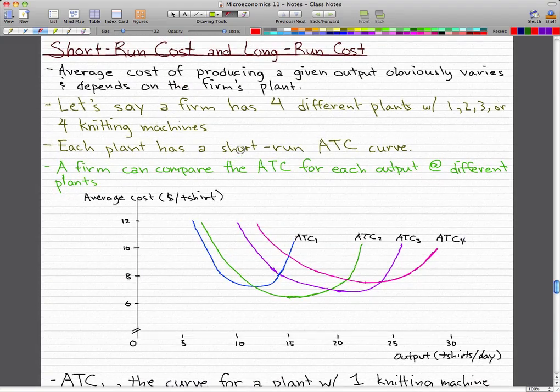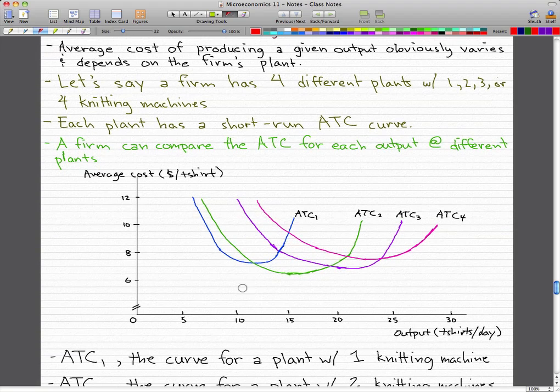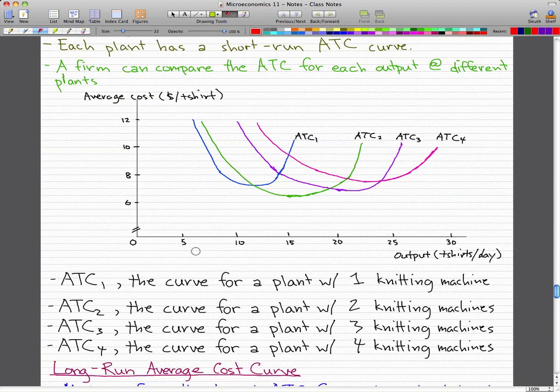So ATC1 is the average total cost curve for a plant with one knitting machine. So this blue curve is the curve for a plant with one knitting machine. And ATC2 is the curve for a plant with two knitting machines, so the green curve.